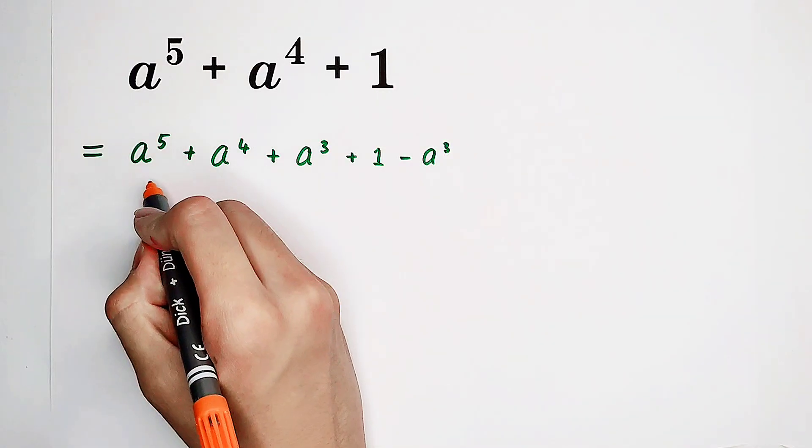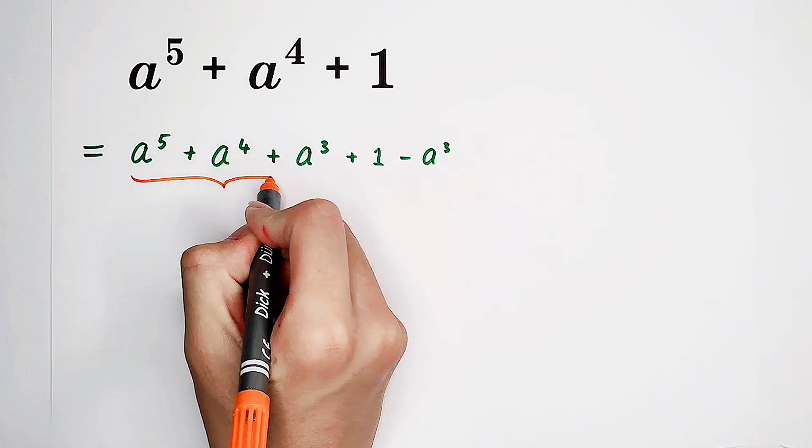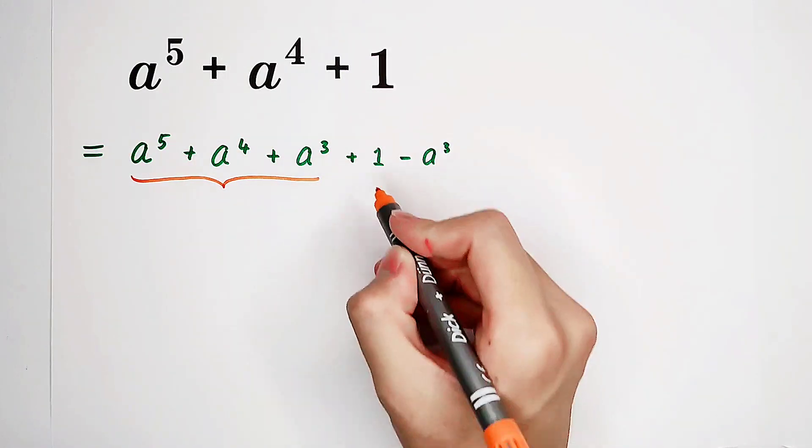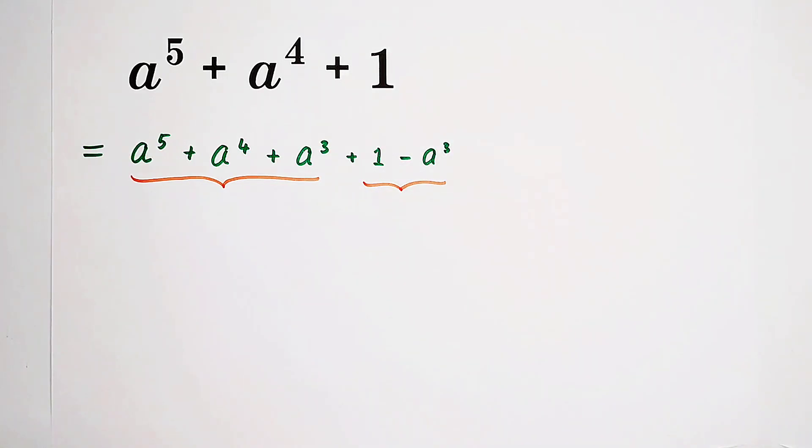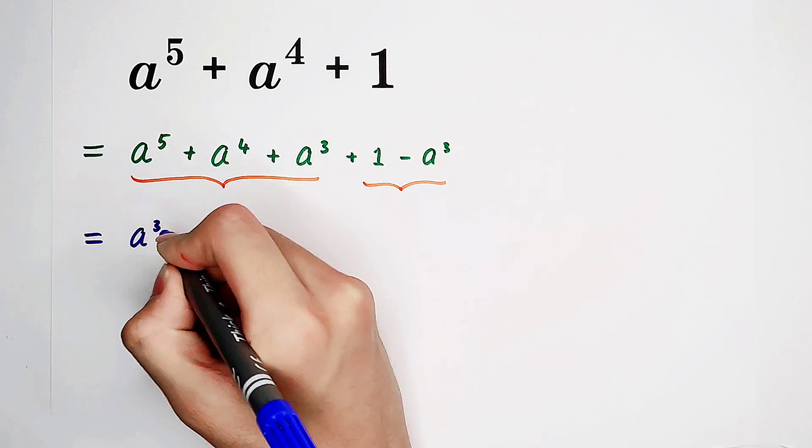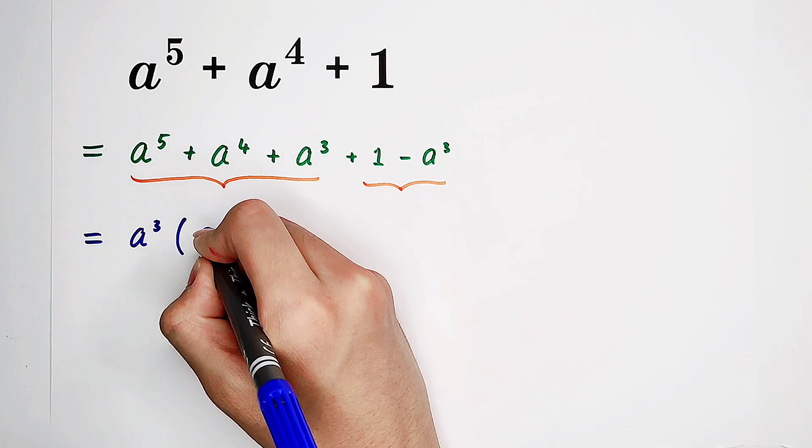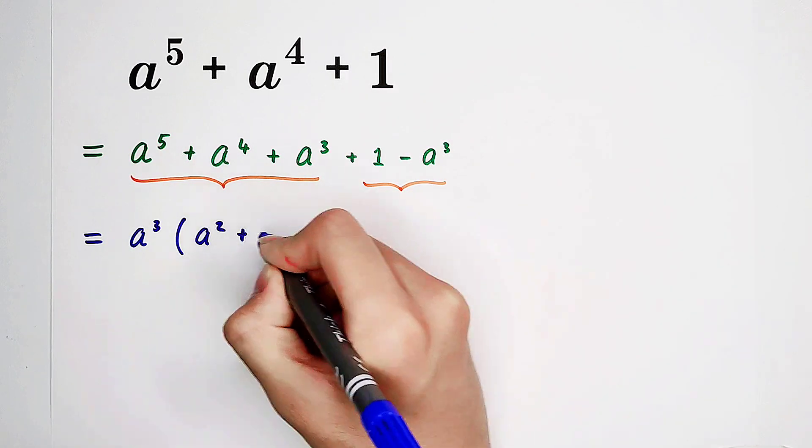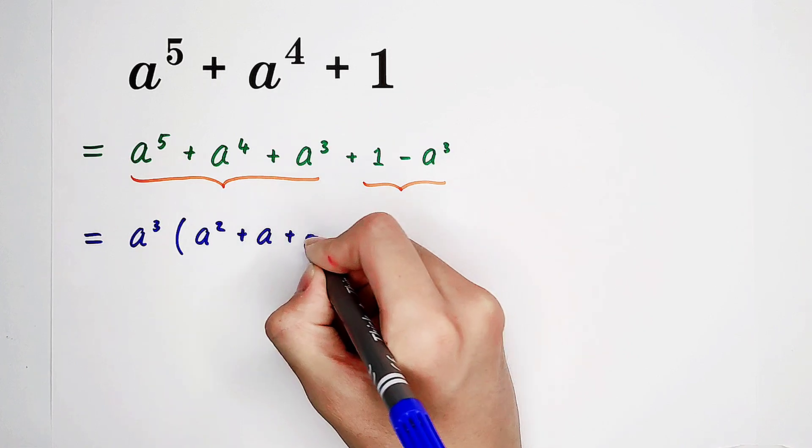And I'm going to tell you that this part can be factorized. This part as well. We can take out an a to the power of 3. In the bracket, it is a squared plus a plus 1.